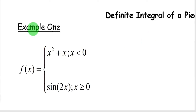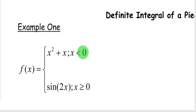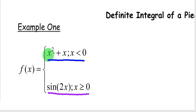For example 1, we have f(x) equals x squared plus x for x less than 0 — that's our first piece. Our second piece is f(x) equals sine of x whenever x is greater than or equal to 0. That's what makes a piecewise function: it's broken up into two pieces.